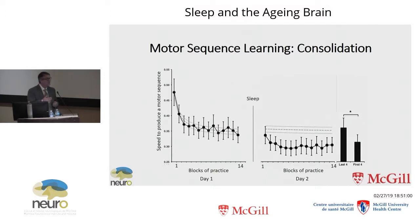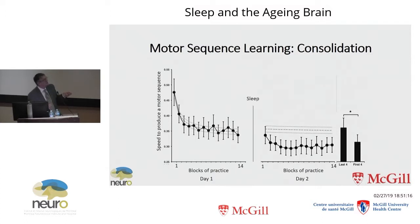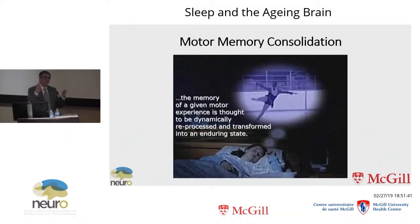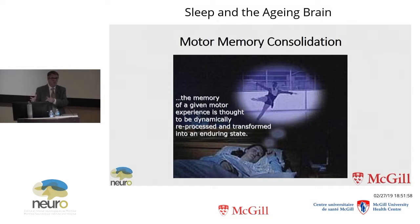When you test a subject the next day on the same task, you can observe that subjects are able to further learn the sequence of movement. They show maintenance of ability over time, but also another phenomenon which we call the consolidation process, where comparing performance at the end of training to the beginning of the next session shows significant gains in performance. We think those gains are due to the consolidation process that occurs between different sessions of training, defined as the motor experience being dynamically reprocessed and transformed into an enduring state — transferring the memory trace into long-term memory.